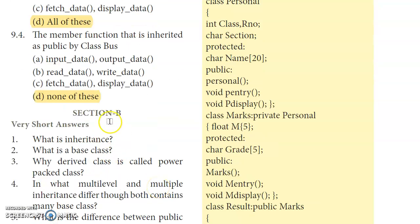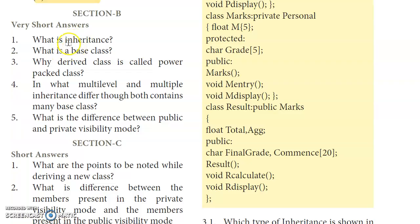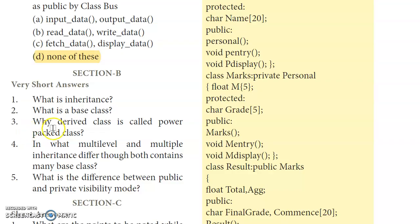Section B — First question: What is inheritance? The mechanism of deriving a new class from an existing class is called Inheritance. Second question: What is a base class? A class that is used as the basis for creating a new class is called a super class or a base class.